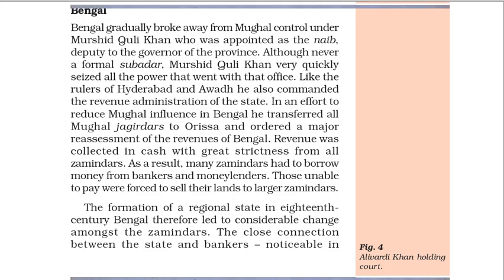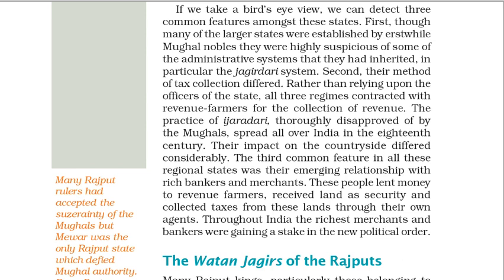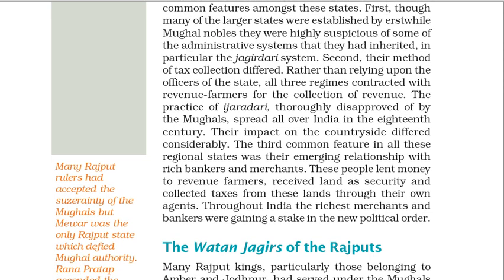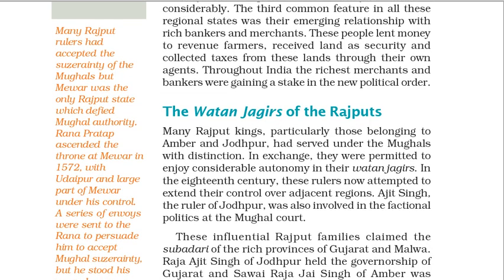If we take a bird's eye view, we can detect three common features amongst these states. First, though many of the larger states were established by erstwhile Mughal nobles, they were highly suspicious of some of the administrative systems they had inherited — in particular the Jagirdari system. Second, their method of tax collection differed: rather than relying upon the officers of the state, all three regimes contracted with revenue farmers for the collection of revenue. The practice of Ijaradari, thoroughly disapproved of by the Mughals, spread all over India in the 18th century. The third common feature was their emerging relationship with rich bankers and merchants, who lent money to revenue farmers, received land as security and collected taxes through their own agents. Throughout India the richest merchants and bankers were gaining a stake in the new political order.